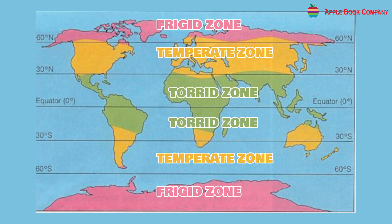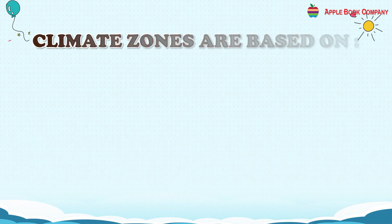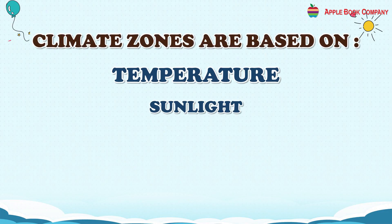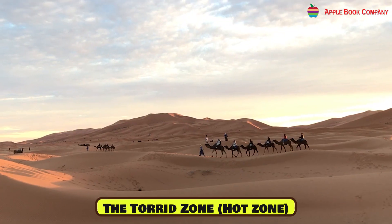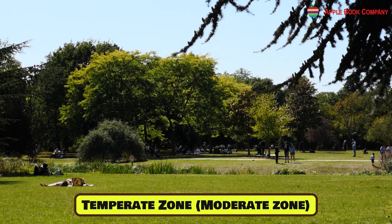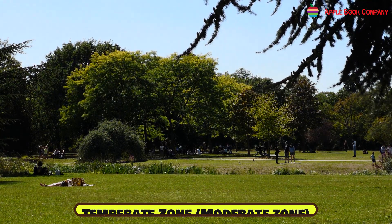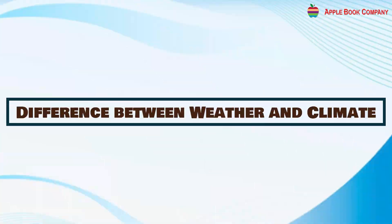Earth is divided into three climate zones: the Torrid, Temperate, and Frigid Zones. These zones are based on factors like temperature, sunlight, and location on the Earth's surface. The Torrid Zone is the Hot Zone, the Temperate Zone is the Moderate Zone, and the Frigid Zone is the Cold Zone.